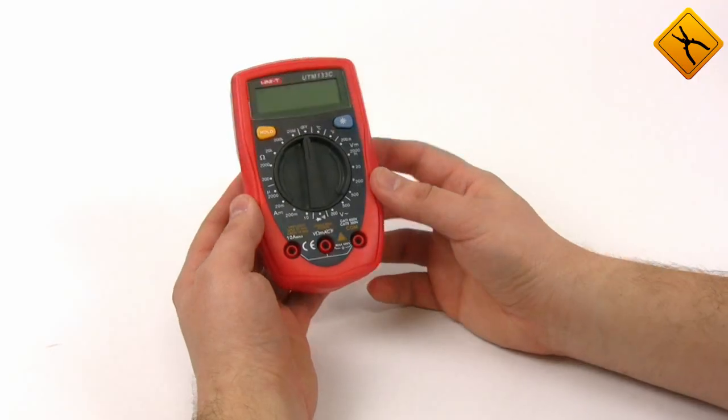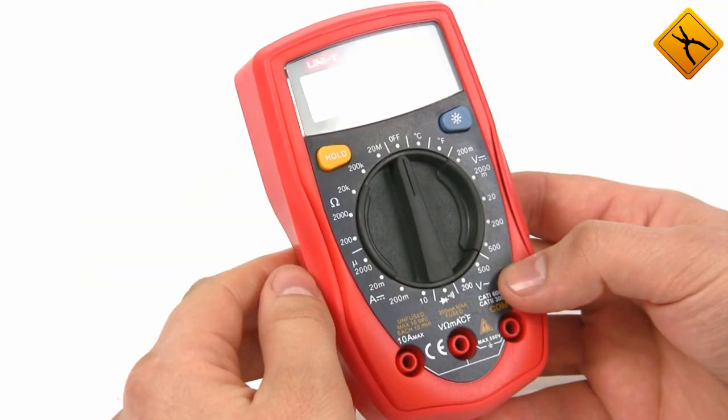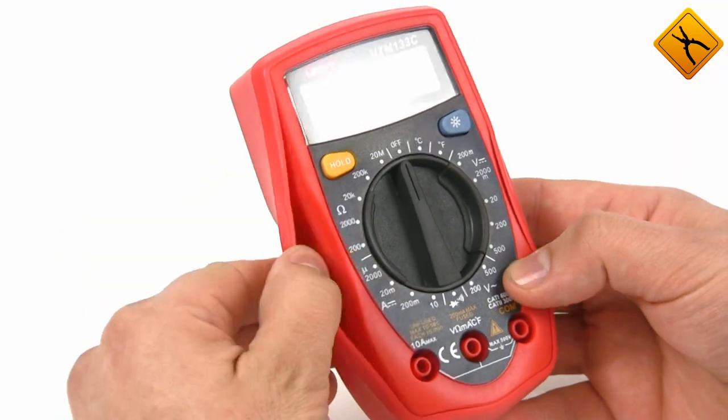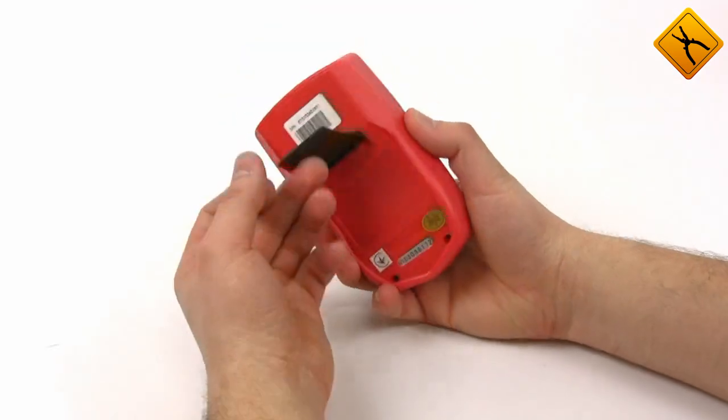The multimeter is compact and it may be even called pocket size. It is made of high quality plastic and covered with protective rubber coating. There is a small support stand.